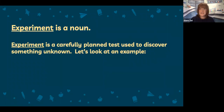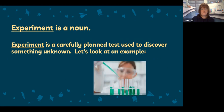Let's take a look at the word experiment. Experiment is a noun — a carefully planned test used to discover something unknown. Here you see a scientist performing some kind of experiment in the lab. She planned this out and she's performing tests to hopefully get some information that she doesn't know yet, maybe making comparisons or contrasting results. All of these things are done as part of the process of doing an experiment.